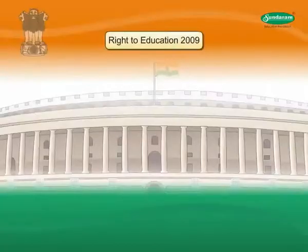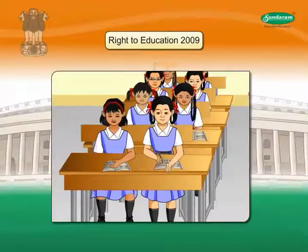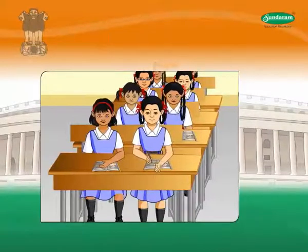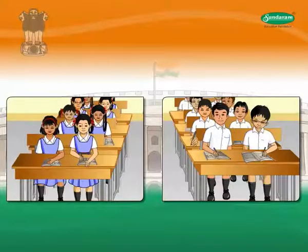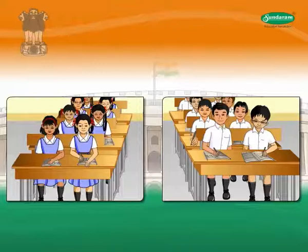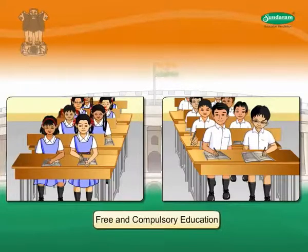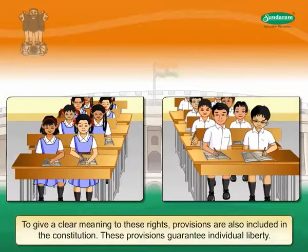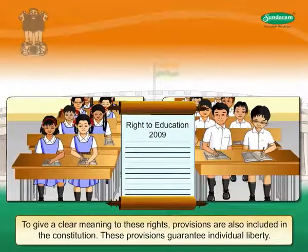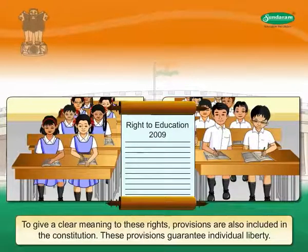In addition to these six rights, the right to education was included in the fundamental rights in 2009. According to the right to education, children between the age of 6 to 14 are entitled to free and compulsory education. Provisions are also included in the constitution to give clear meaning to these rights, and these provisions guarantee individual liberty.